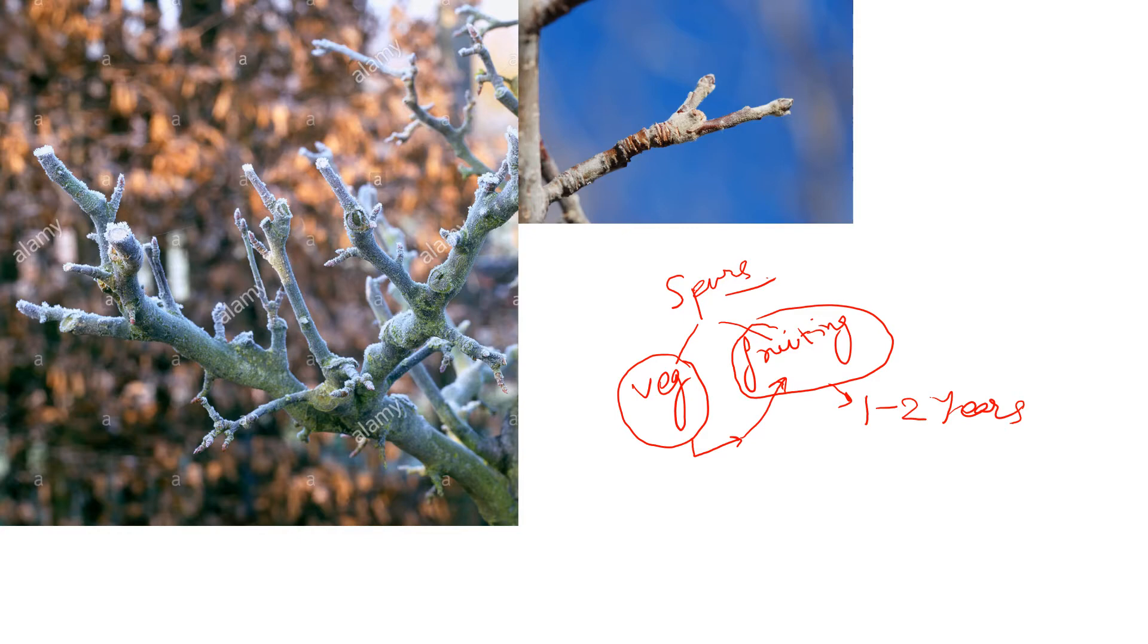In this picture, you can see this is the main shoot here, and these are the secondary branches. These are the tertiary or could be quaternary branches. Over these branches, you can see these small branches here—these are the spurs.